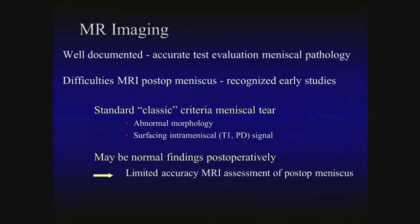MR imaging has been well documented as an accurate test in the evaluation of virgin meniscal pathology, and difficulties with MR imaging have been clearly recognized in evaluation of the postoperative meniscus, dating back to early studies in the late 1980s and early 1990s. These early studies showed that the standard MR diagnostic criteria — namely abnormal morphology or surfacing intra-meniscal short TE signal intensity (T1 or proton density) — may be normal findings postoperatively, limiting the accuracy of MR imaging assessment of the postoperative meniscus.